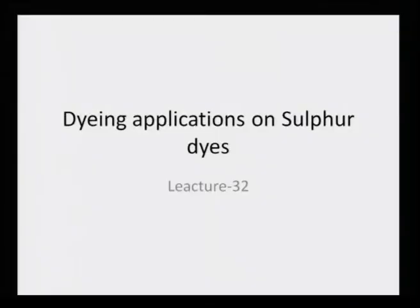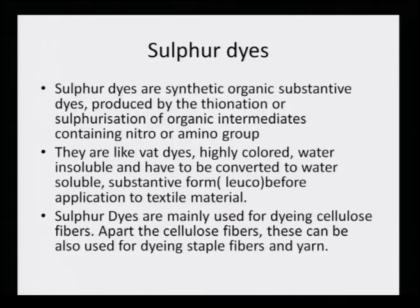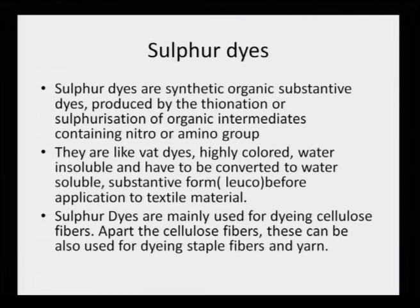Today we will learn about dyeing application with sulphur dyes. Sulphur dyes are synthetic organic substantive dyes produced by the thionation or sulphurization of organic intermediates containing nitro or amino groups. The molecule must have either a nitro group or an amino group, and the dye is prepared by thionation or sulphurization.